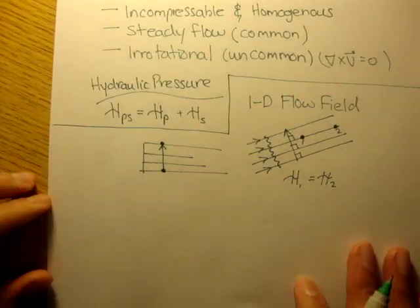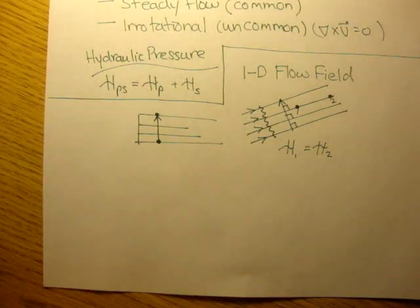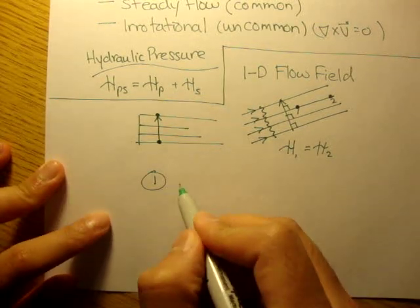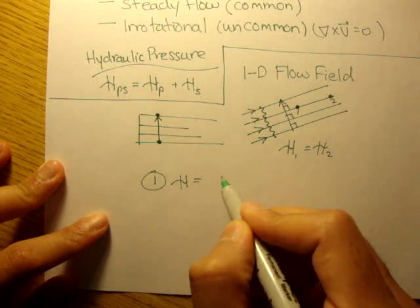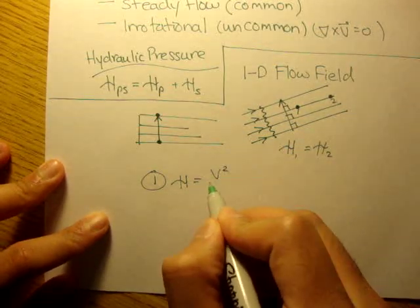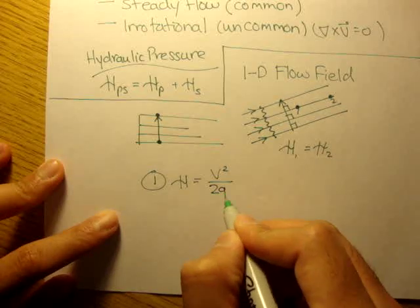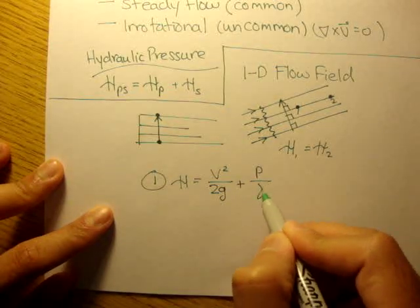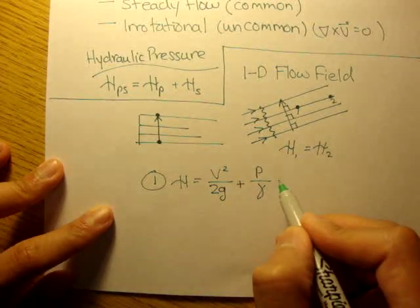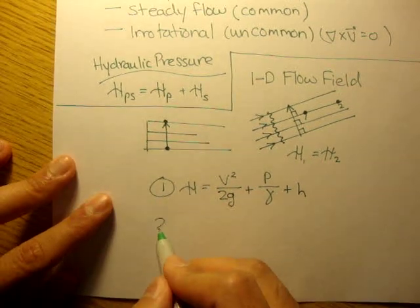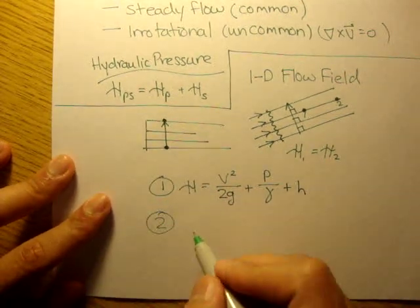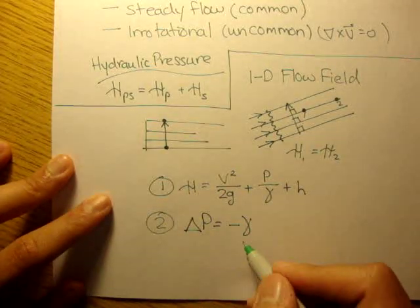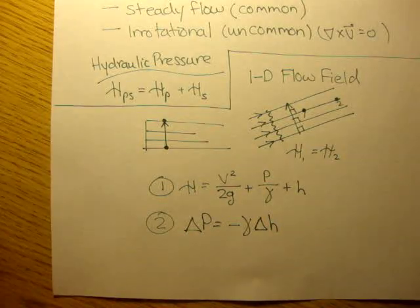So we'll be using two main equations for the next couple of examples. The very first equation would be our newly learned total energy head equation, or Bernoulli's equation, which is velocity squared over two times gravity plus the pressure over specific weight plus height. And our second equation is one we learned a while ago. So the change in pressure is equal to the negative specific weight, or gamma, times the change in height.